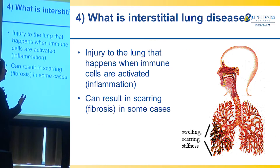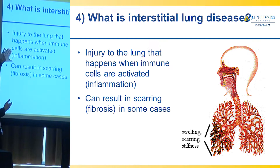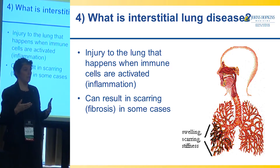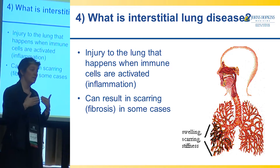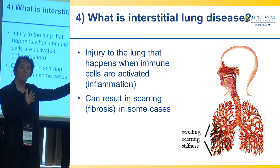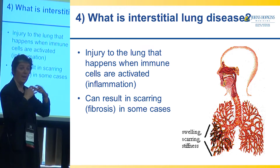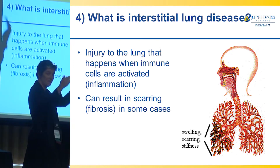What happens when people develop this consequence of myositis — interstitial lung disease — is that immune cells are activated, which we call inflammation. The immune system was built into the body to protect you from things like viruses and bacteria. Part of what the immune system is supposed to do is differentiate between what's from the outside and potentially dangerous and what's part of you that's always safe. For reasons different in every person, there is a breakdown of that ability, and the immune system can turn on the self — we call it autoimmune.